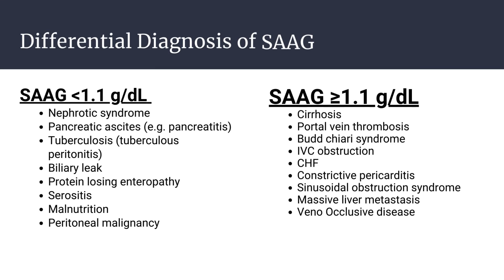Differential diagnosis of SAG: if SAG is less than 1.1 gram per deciliter, the cause of ascites could be nephrotic syndrome, pancreatic ascites, tuberculosis, biliary leak, protein-losing enteropathy, serositis, or malnutrition.